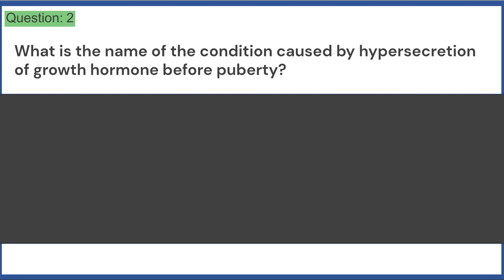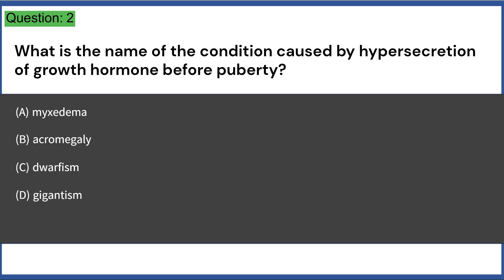What is the name of the condition caused by hypersecretion of growth hormone before puberty? A. Myxedema, B. Acromegaly, C. Dwarfism, D. Gigantism, E. Hyperthyroidism. Answer: D.